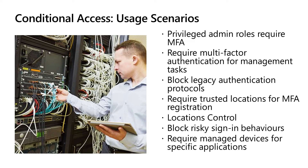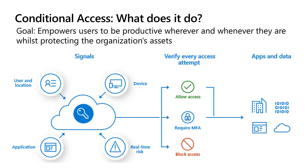For example, you might say that in the London office, if you're physically there, you don't need MFA because you're in a trusted location. But if you're traveling and in a hotel, that's not a trusted location, so you need an additional form of identification. Conditional access gathers signals — the user's location, the application they're using, the user's device (is it registered in Azure AD, managed with Microsoft Endpoint Manager/Intune?), and real-time risk. It verifies every single access attempt — there is no way around it.